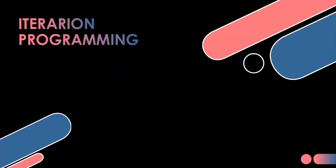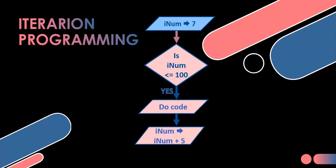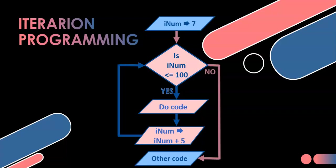Iteration is what conditional loops fall under. Here we've got a flowchart where we set iNum to a default value of seven, and we check if iNum is less than 100. We want to loop until iNum is greater than 100. While it's less than 100, we do certain code, then we change iNum — let's say we increase it by five. It'll go back to the question and ask: are we above 100 yet? If not, we continue in this loop until iNum is greater than 100, then it slips out and continues with the code after the loop.